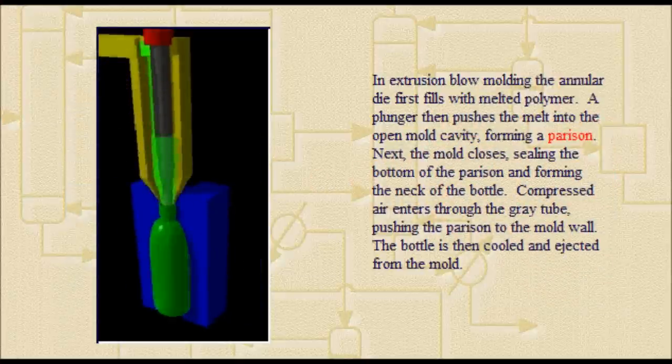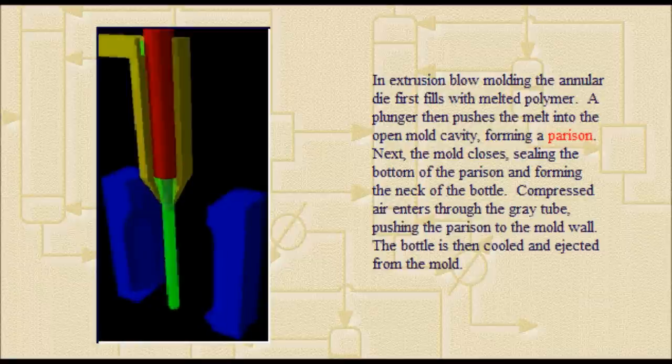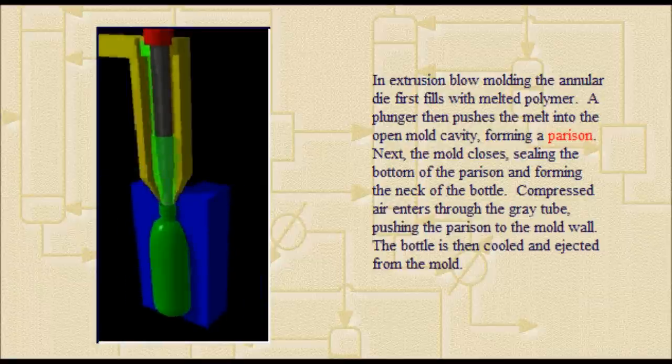Extrusion blow molding: The annular die first fills with melted polymer. A plunger then pushes the melt into the open mold cavity, forming a parison.